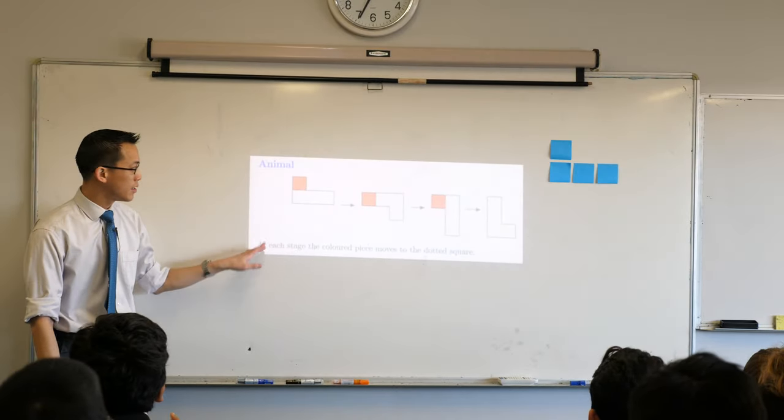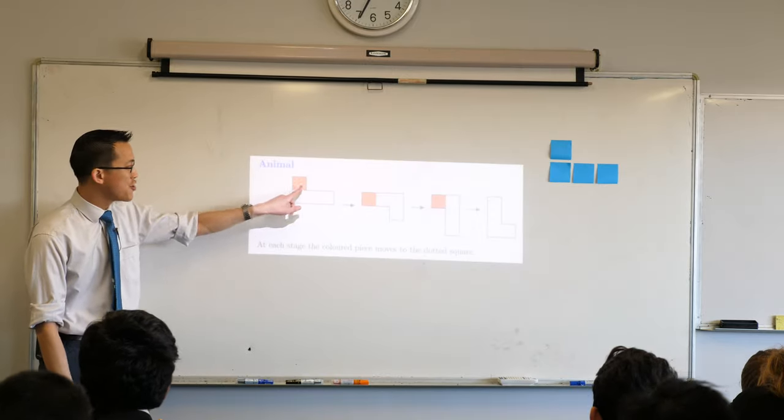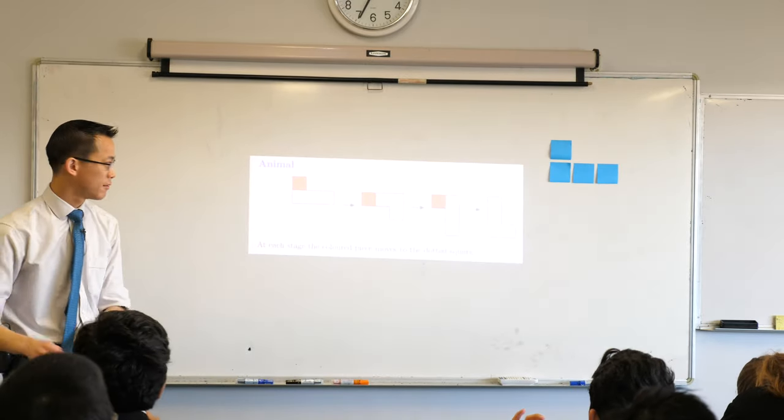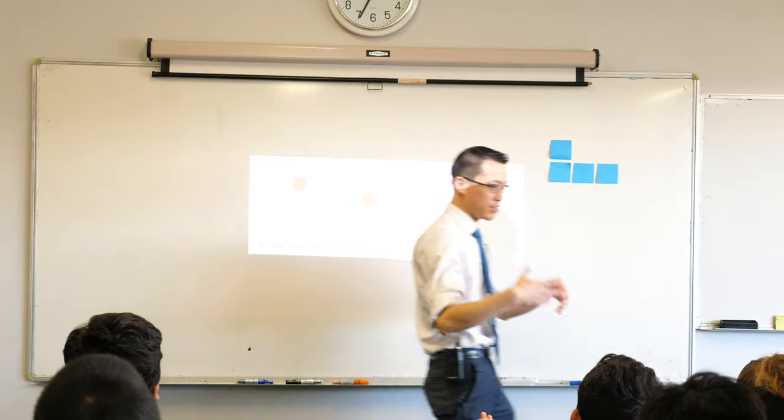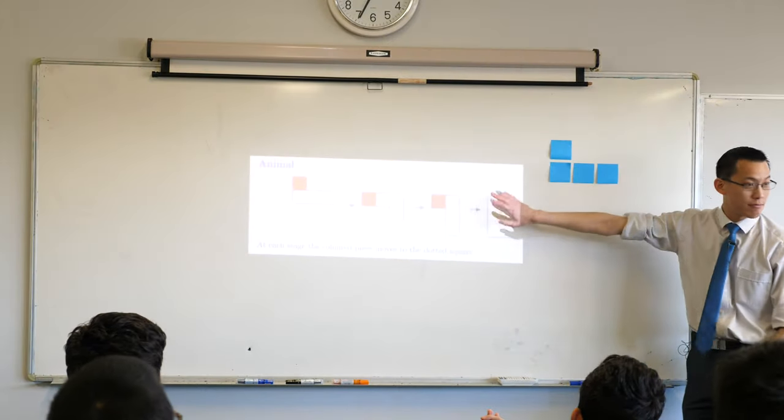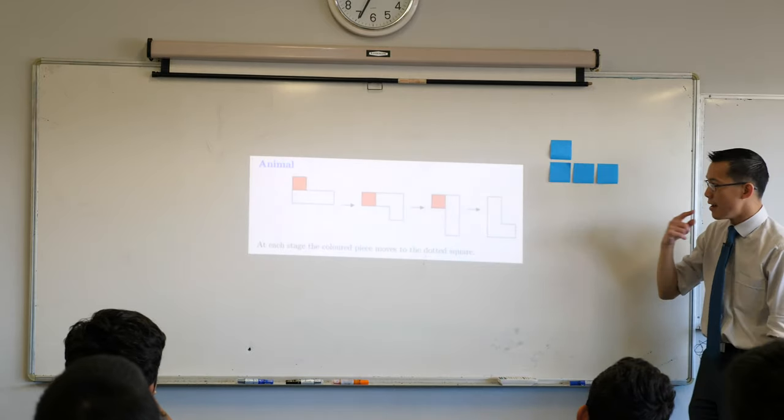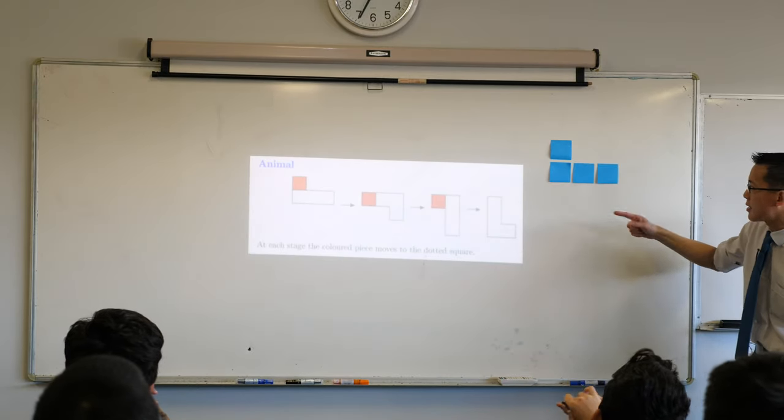So let me explain to you what an animal or a vegetable or minerals are. An animal is when you can take the shape and you can move a single square and your shape can move away from where it is. Let me give you an example. So this is that tetromino. So this is where it started.